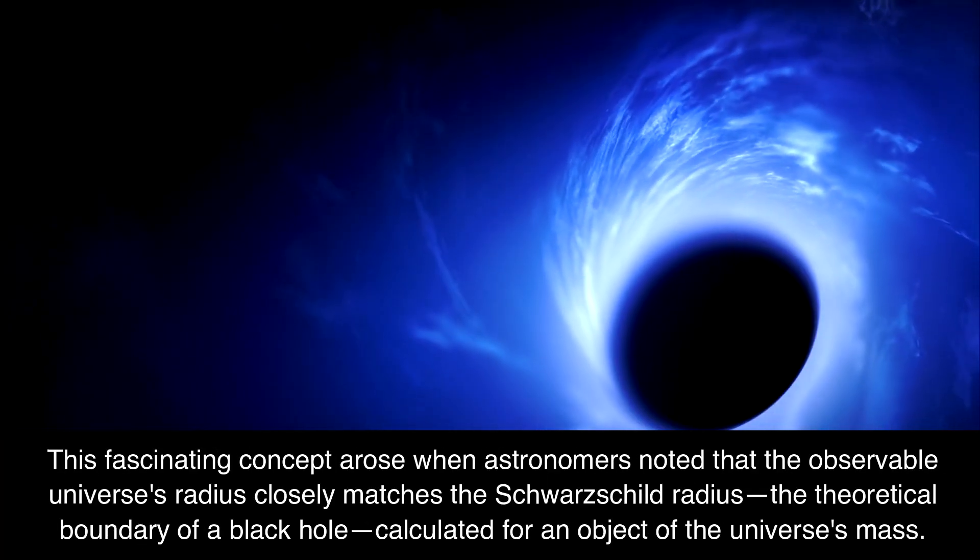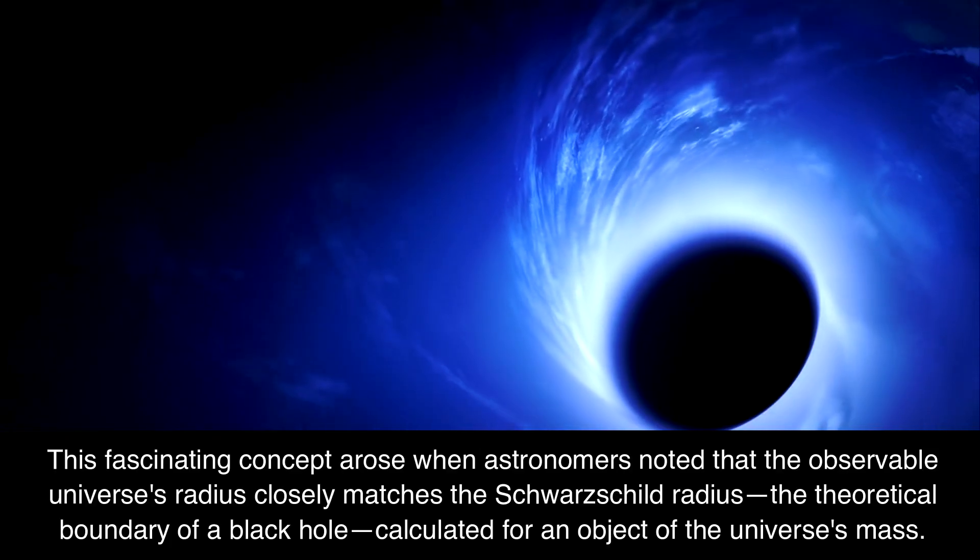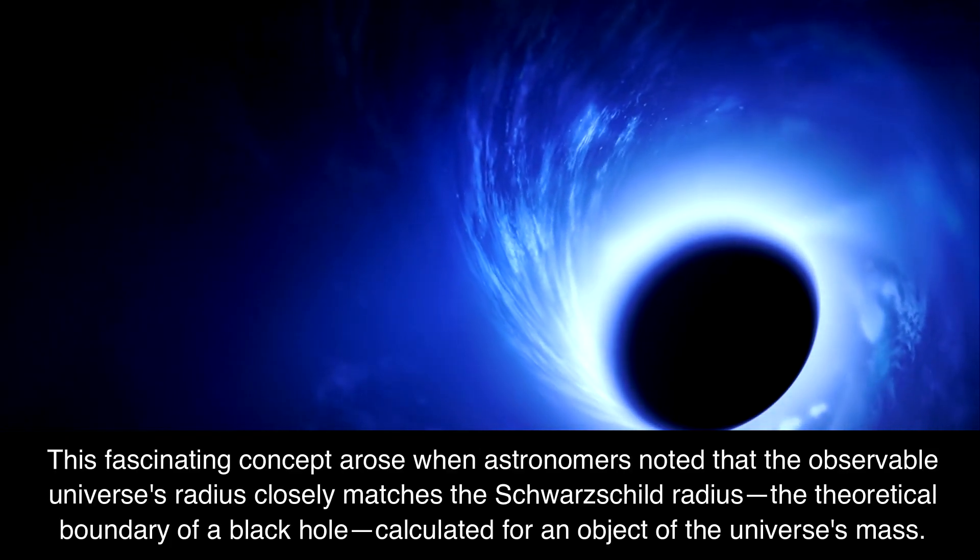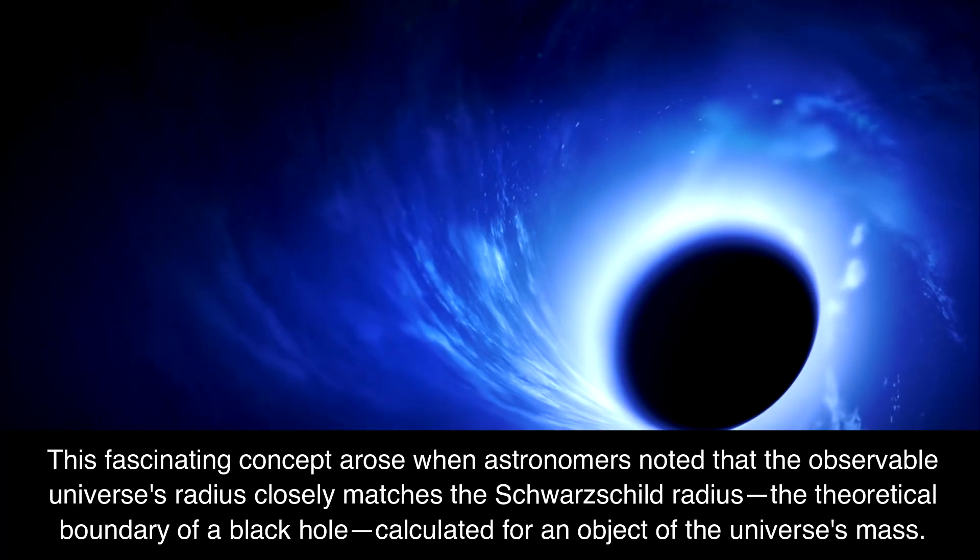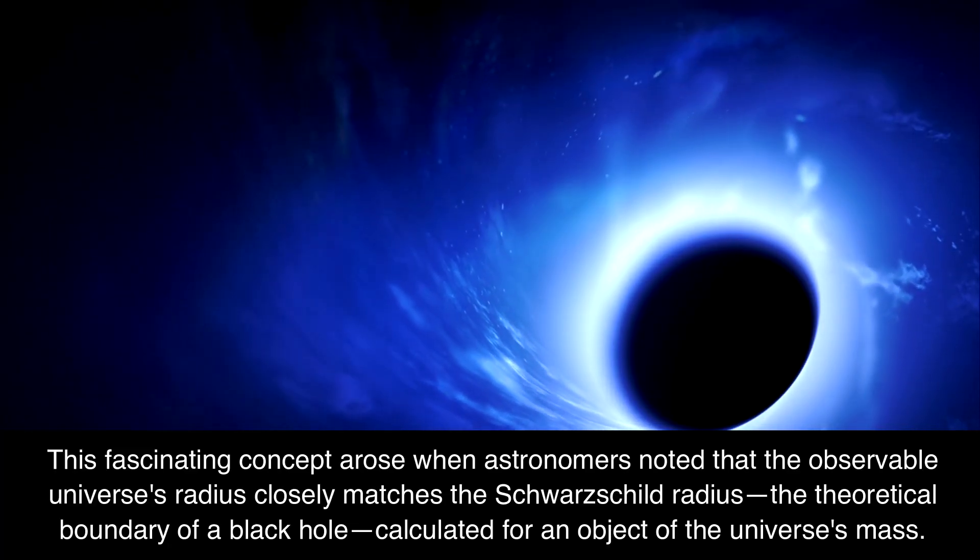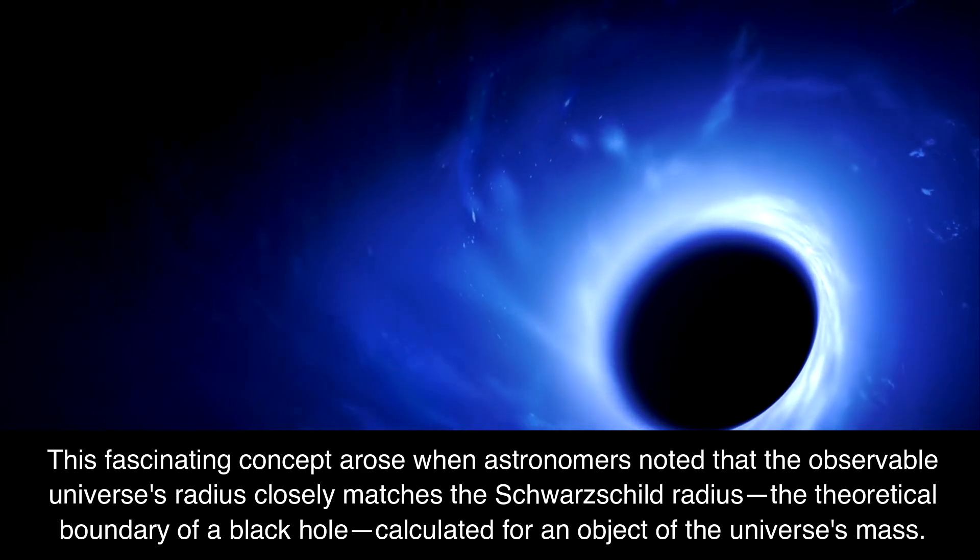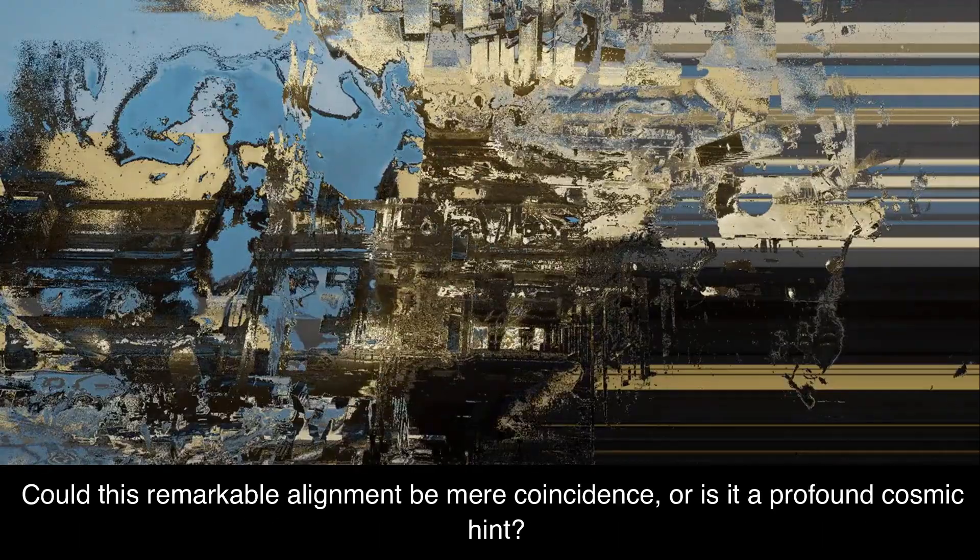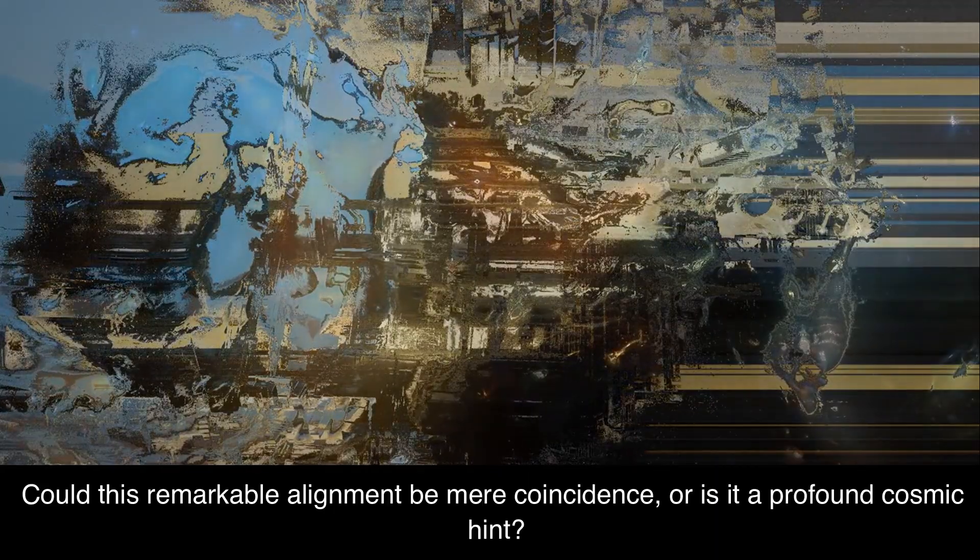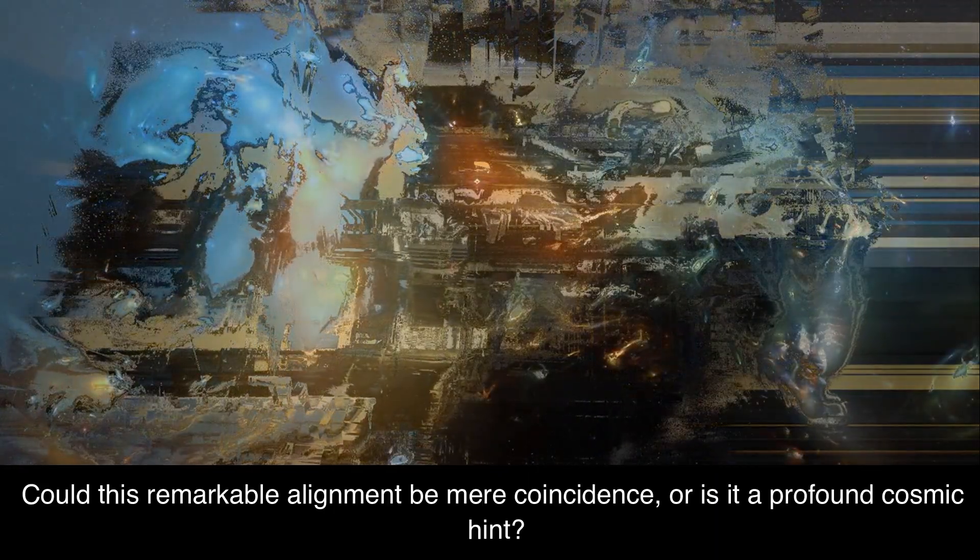This fascinating concept arose when astronomers noted that the observable universe's radius closely matches the Schwarzschild radius, the theoretical boundary of a black hole, calculated for an object of the universe's mass. Could this remarkable alignment be mere coincidence, or is it a profound cosmic hint?